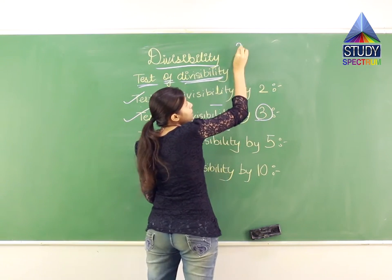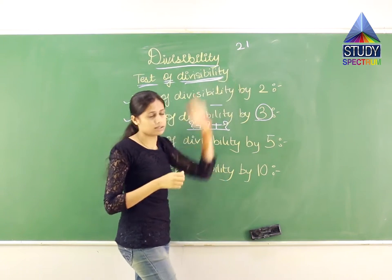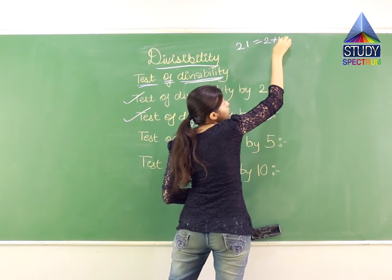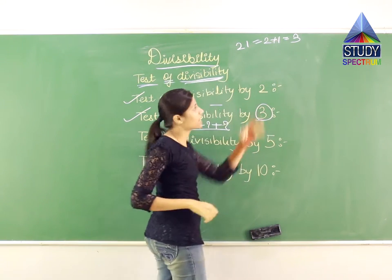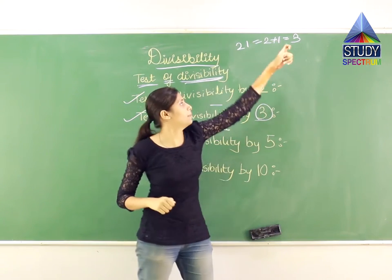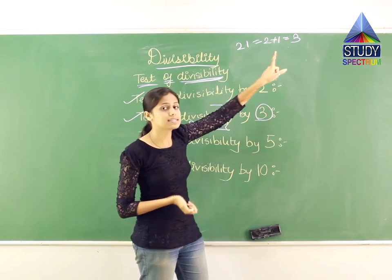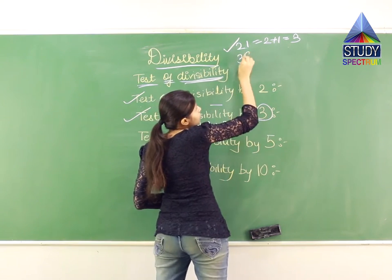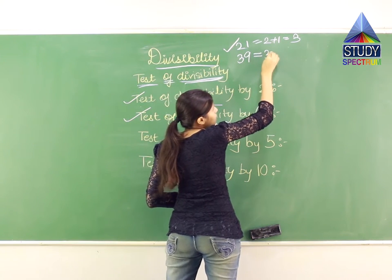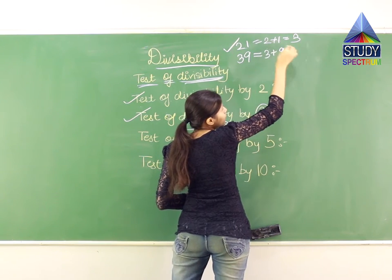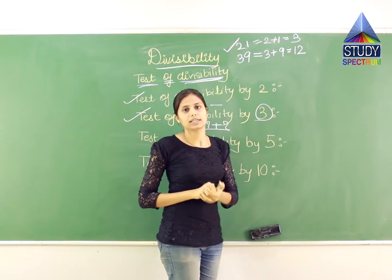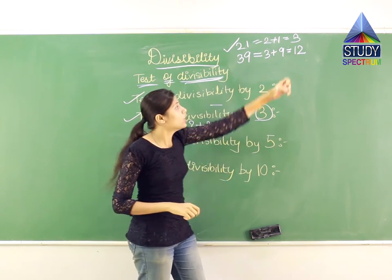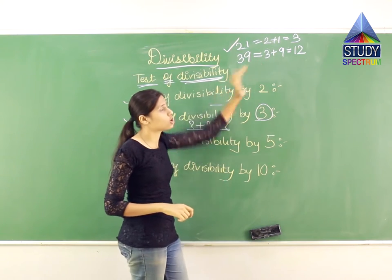Let us take a simple example: 21. Is 21 divisible by 3? Add the digits: 2 + 1 = 3. Is 3 divisible by 3? Yes — 3 ones are 3. So the whole number 21 is divisible by 3. Another example: 39. Add the digits: 3 + 9 = 12. Is 12 divisible by 3? Yes — 3×4=12. So 39 is also divisible by 3.